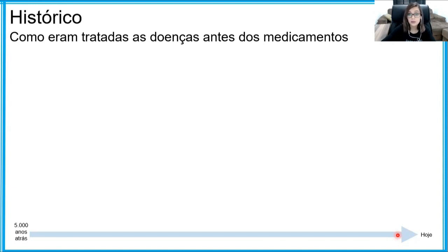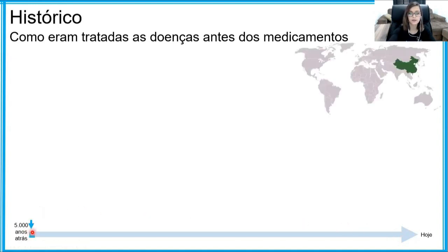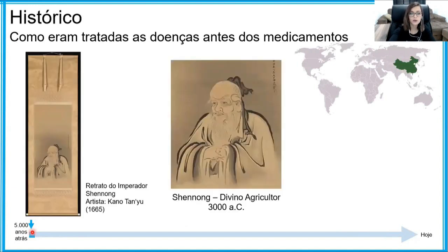As doenças eram tratadas com rituais e rezas para espantar esses maus agouros. O primeiro relato do uso de plantas para tratar doenças humanas vem de 5 mil anos atrás na região da China, onde viveu um imperador chamado Shenlong. Esse imperador, que ficou conhecido também como divino agricultor, começou a tratar as pessoas com preparos a partir de cascas e folhas de árvores e outras ervas. Esse é um dos primeiros relatos sobre o uso de plantas medicinais para tratar doenças humanas.